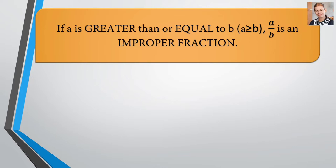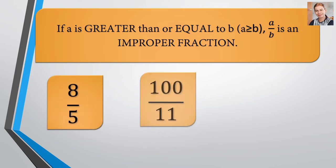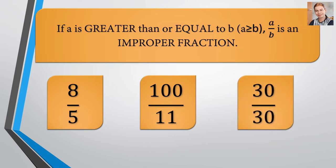At narito ang ilan sa halimbawa ng ating improper fraction. We have 8 over 5, we have 100 over 11, and we have 30 over 30. Kung mapapansin nyo dito guys, yung value ng nasa itaas ng bar is mas malaki kaysa doon sa value ng nasa ibaba.